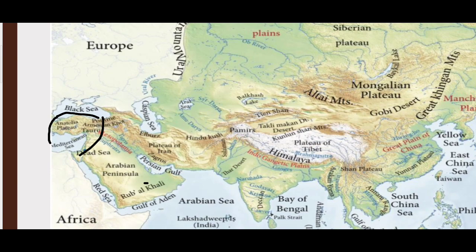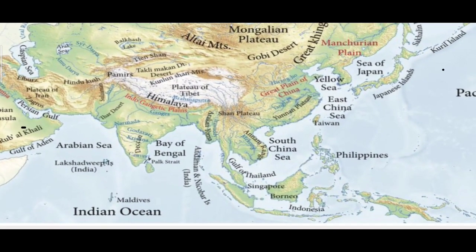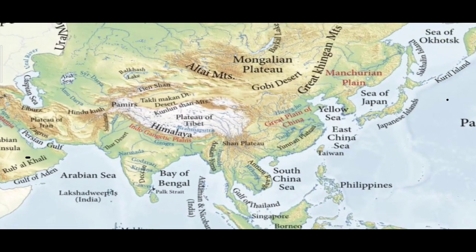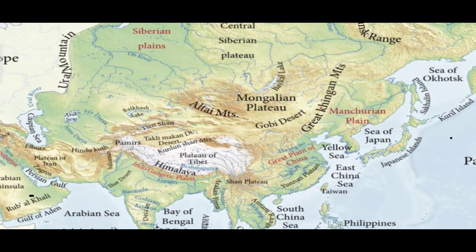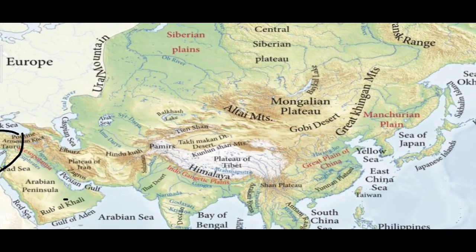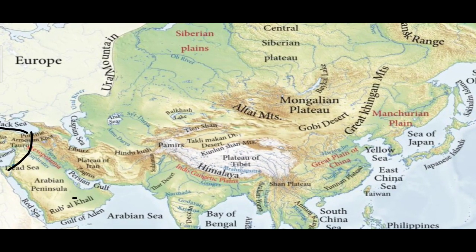Below the Anatolia Plateau is the Arabian Peninsula, which is also a desert region — Rub' al Khali. The Gulf of Aden is nearby. Rub' al Khali is also a desert. The Plateau of Iran, located between Elburz and Zagros, is also very important to note.